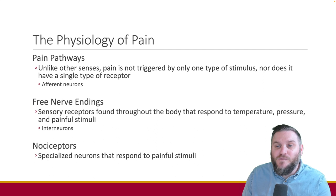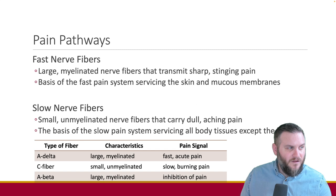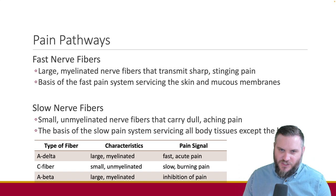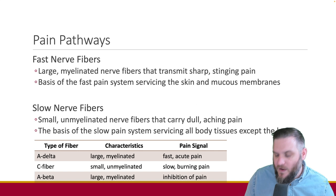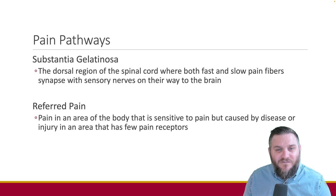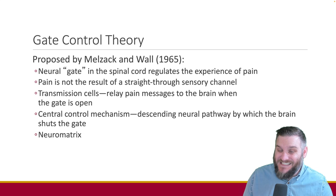These regions include the substantia gelatinosa of the spinal cord and the periaqueductal gray region. Additionally, the dorsal anterior cingulate cortex plays a role in the cognitive modulation of pain. Genetic research suggests that the experience of pain has a heritable component. According to the gate control theory by Melzack and Wall, a pain gate in the spinal cord can be closed through stimulation of the fast pain fiber system or the descending neural pathways to the brain.